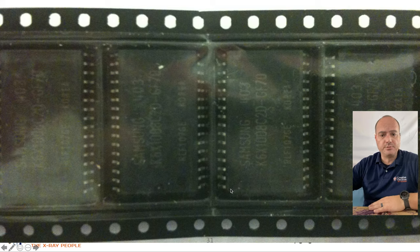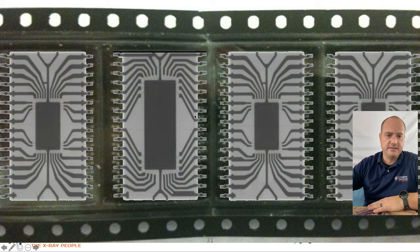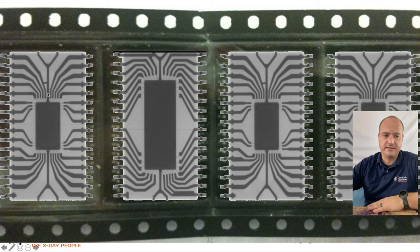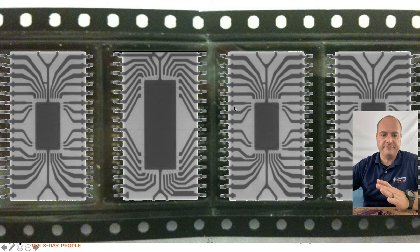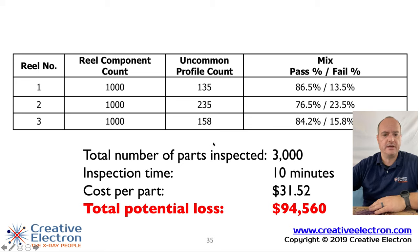Another component was SD RAMs from Samsung. The tape looks beautiful from the outside, but using X-rays you can clearly see discrepancies within the same reel of components, which definitively flags them as counterfeit. We looked at 3,000 components with a potential loss of well over $90,000.